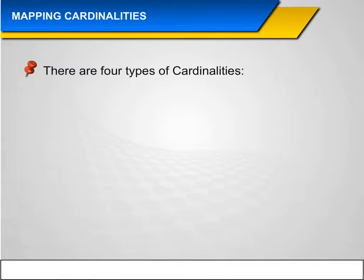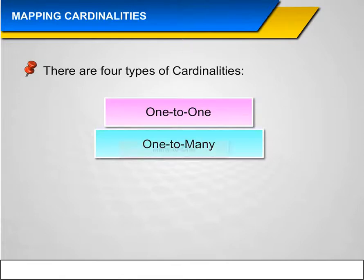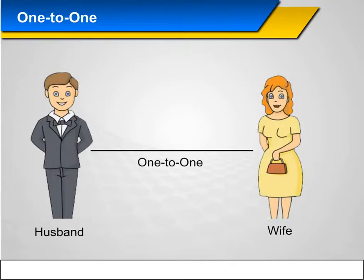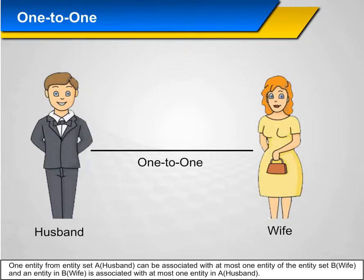There are four types of cardinalities: One-to-one, One-to-many, Many-to-one, and Many-to-many. One-to-one: One entity from entity set A (e.g., husband) can be associated with at most one entity of entity set B (e.g., wife), and an entity in B can be associated with at most one entity in A.